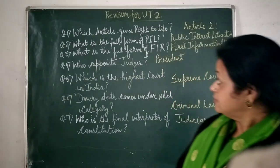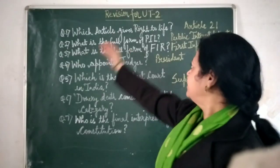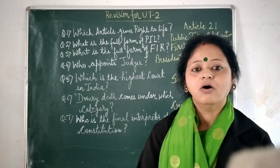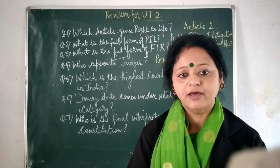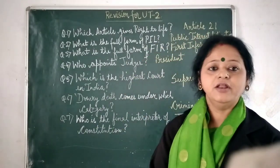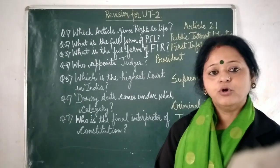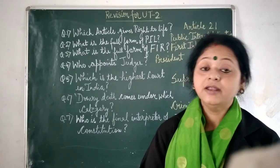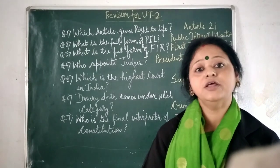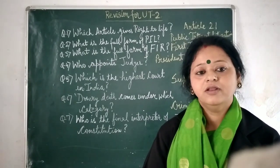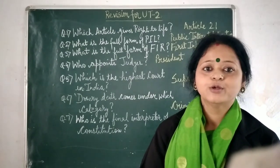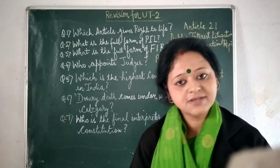Now see the first question: which article gives the right to life? Which article guarantees all the citizens of the country the right to life? That article is Article 21. It is a very important article and it protects the life of the citizen. Until and unless someone has committed a very severe crime, in the rarest of the rare case, the death punishment is given. So Article 21 guarantees the right to life.